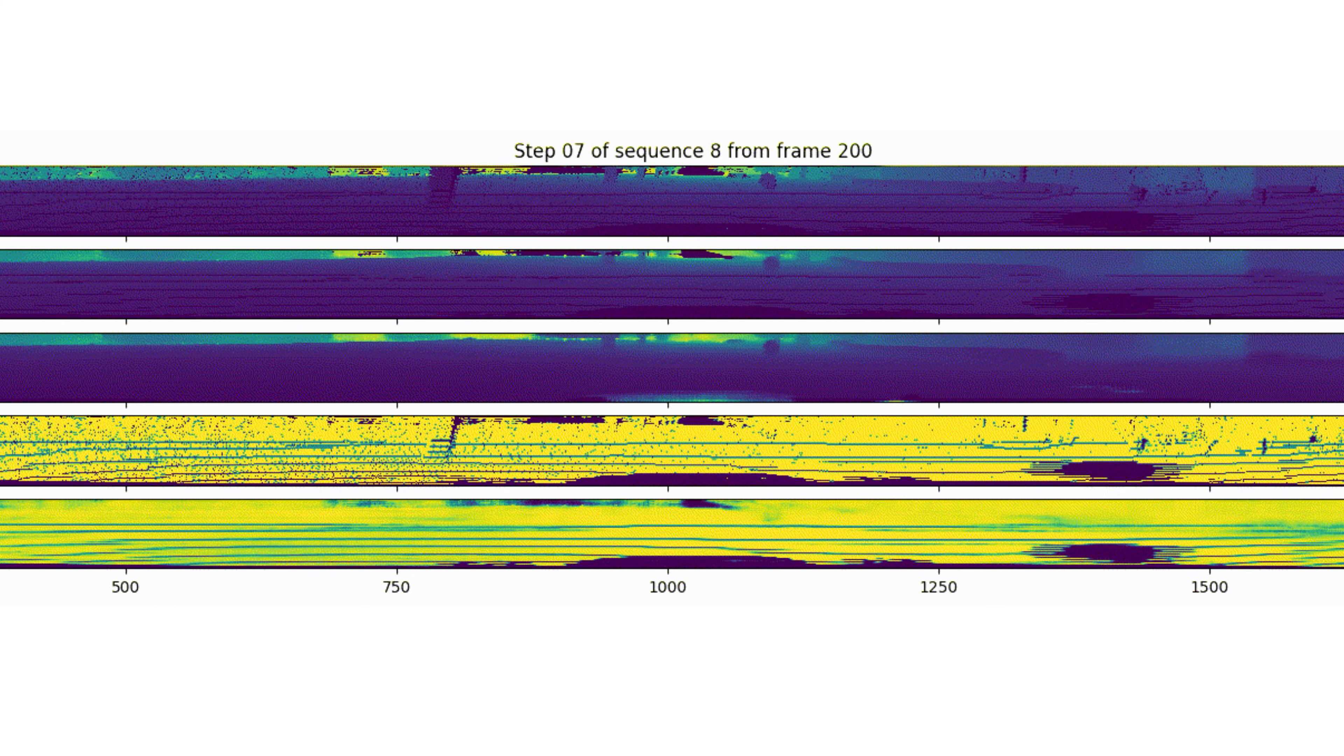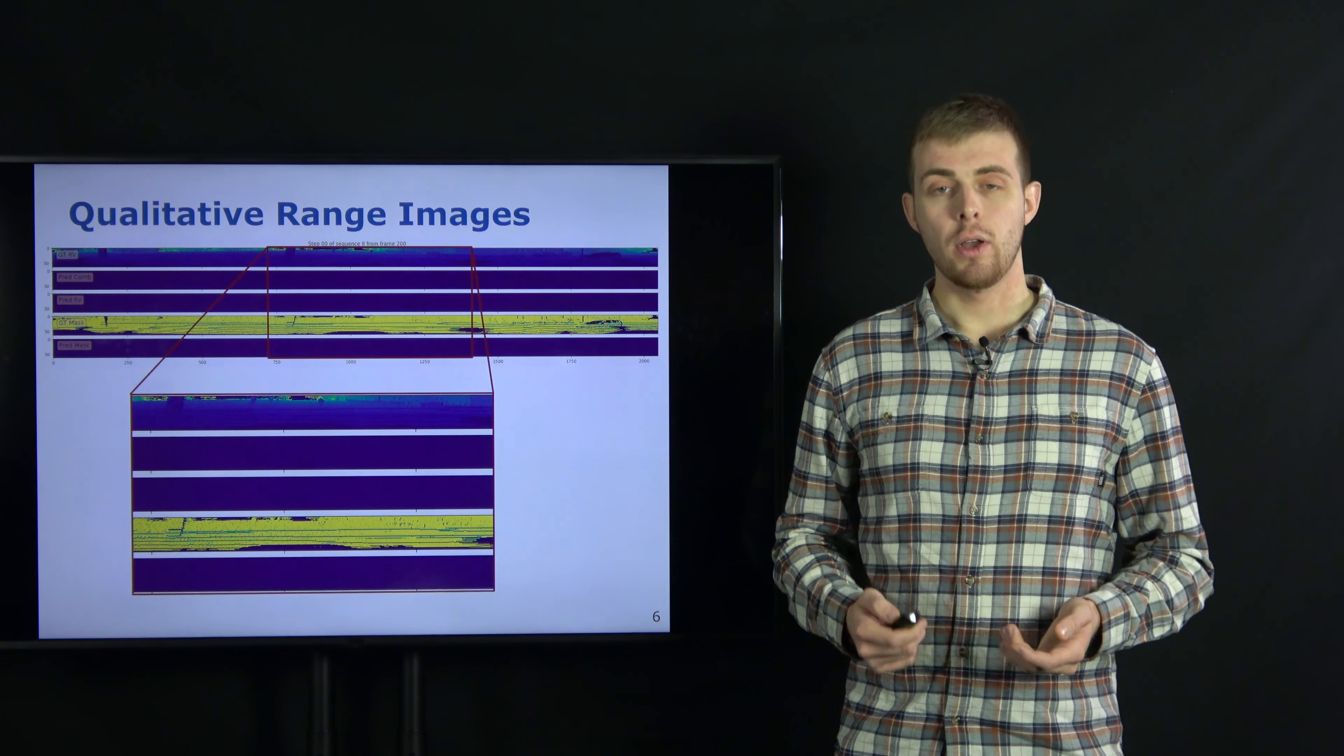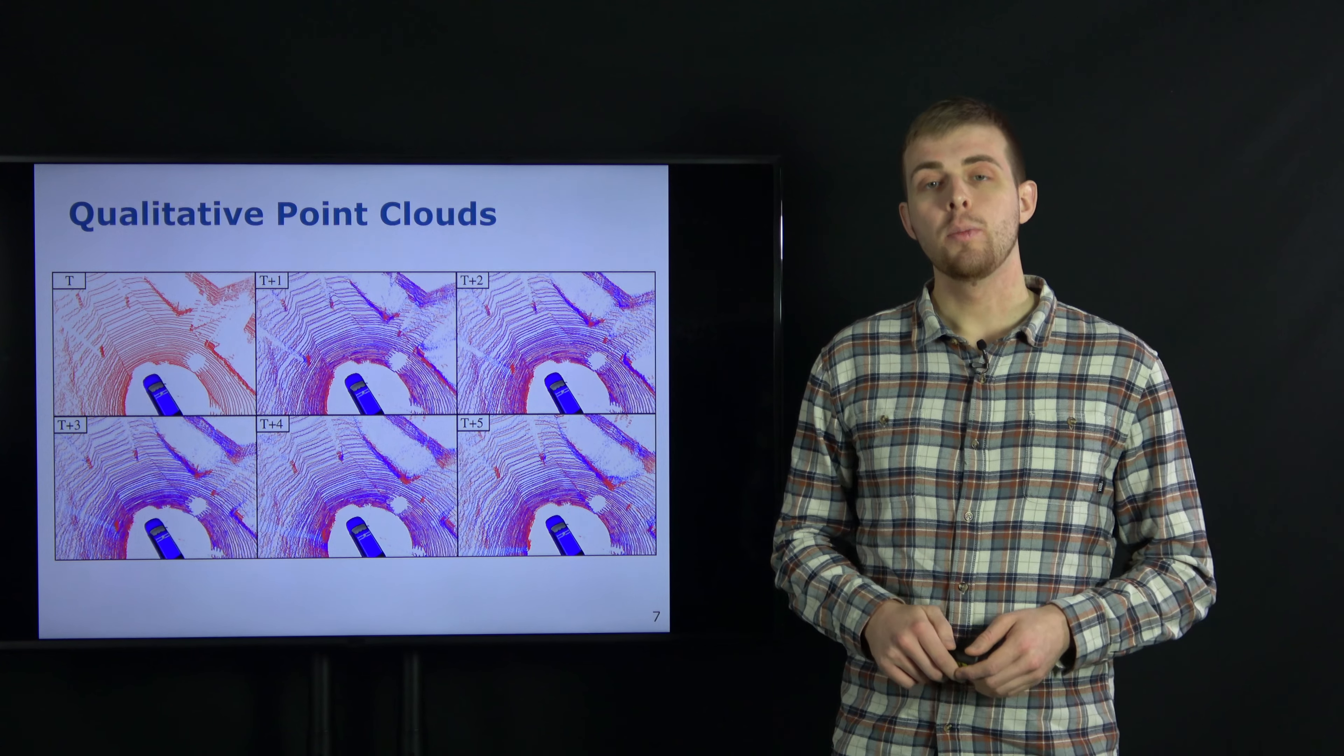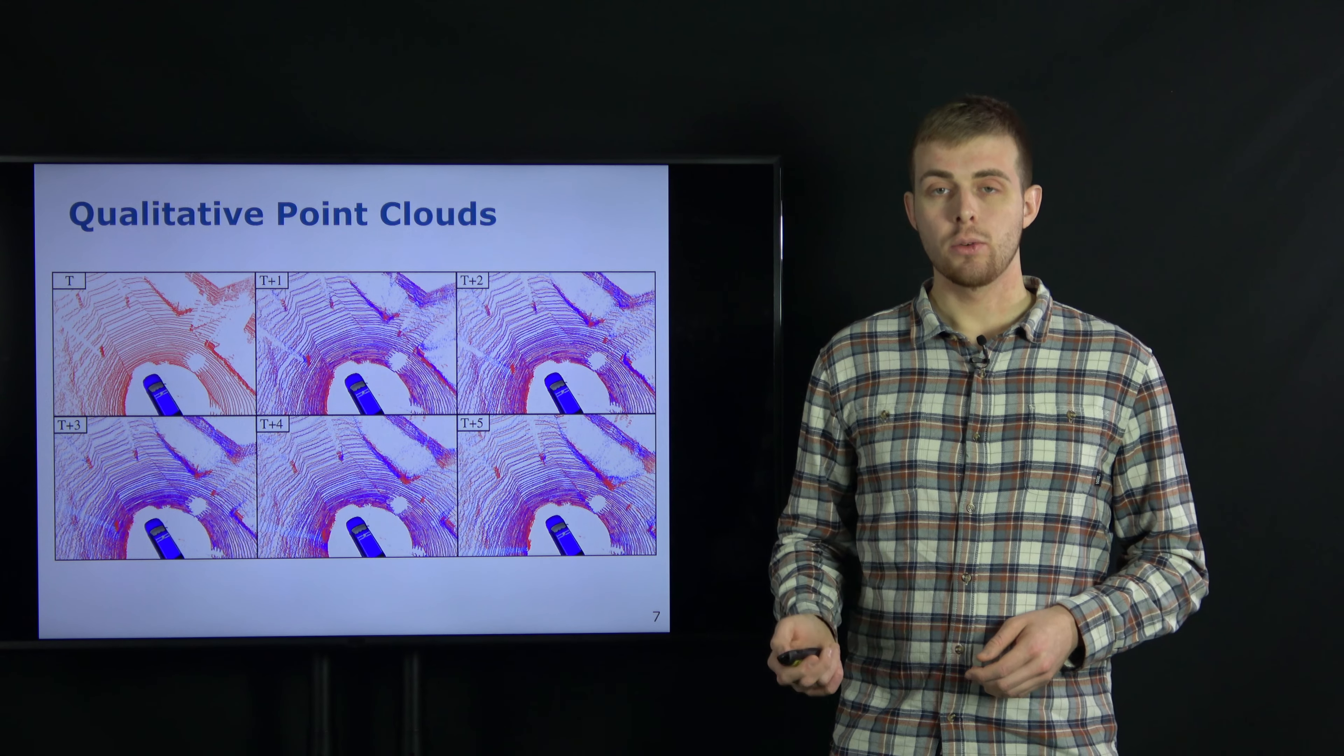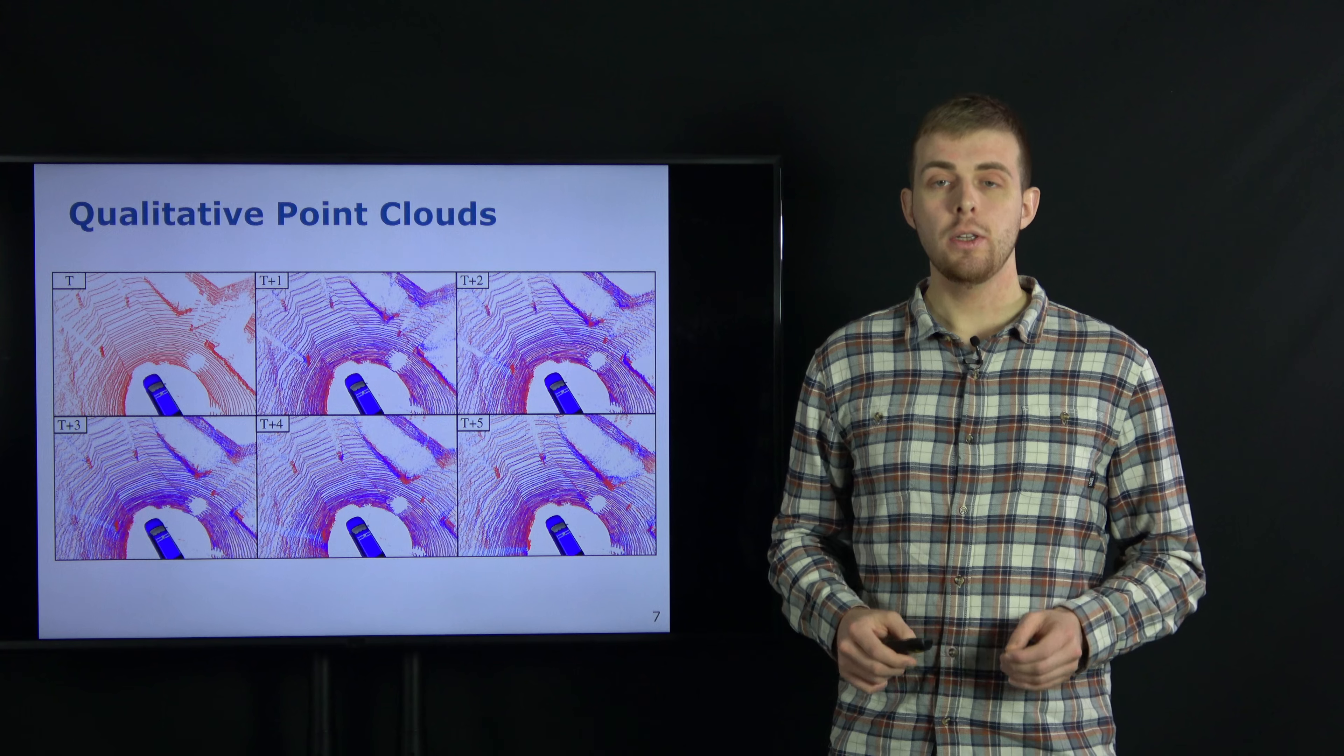In this example, the car is driving straight with a bicycle in front. Whereas the prediction of static points follows a rigid body transformation, moving objects like the bicycle have their own relative motion that needs to be inferred. After five past steps, our prediction of the static environment around the car, as well as the movement of the bicycle, are successfully predicted for five future steps.